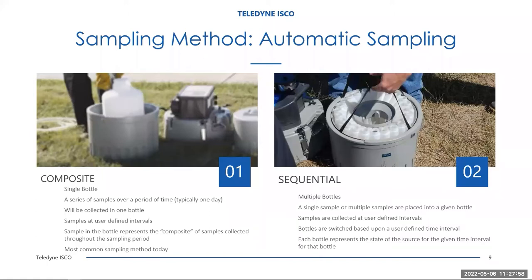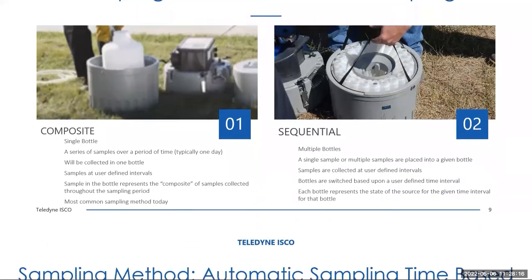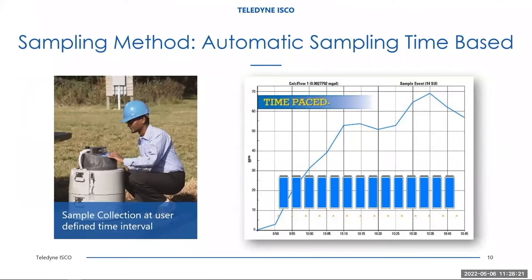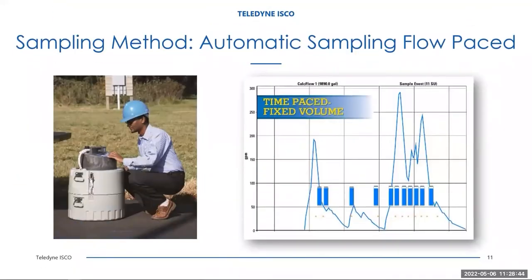It is also worth noting that we do have another sampling option — the vacuum sampler. However, for portable sampler applications, the peristaltic pump is the most appropriate option to select. This is an example of a time-paced program in a multiple-bottle sampler, where you can see that at regular intervals those samples were collected over that period of time. This would be an example of a flow-paced sampling routine where you can see that the intensity of sample collection is greater when flow is high, because we are pacing the sample based upon flow volume moving past this site over that period of time.